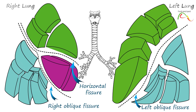A bronchopulmonary segment is defined as a portion of lung supplied by a specific segmental bronchus. A bronchopulmonary segment is surrounded by a thin layer of connective tissue, which physically separates it from the adjoining segments.